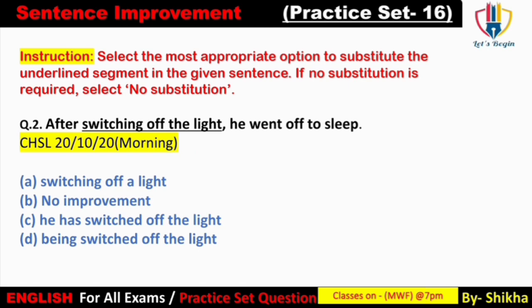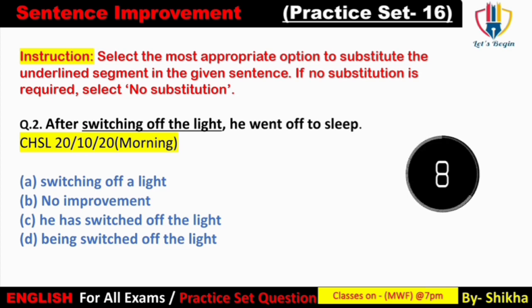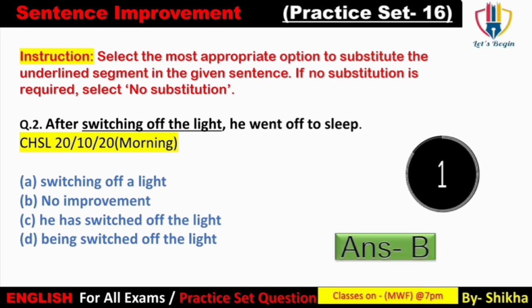Next question: 'After switching off the light, he went off to sleep.' Option A mein diya gaya hai 'switching off a light' — yahan par specified light ki baat ki gayi hai, toh 'the' hona chahiye, 'a' galat ho jayega. Option C mein 'he has switched off the light' — yeh ek alag sentence ban jayega, dono mein koi connection nahi. Option D mein 'being switched off' — 'being' ka use hota hai jab khud ke upar koi cheez apply ki jati hai, par yahan kisi ke dwara light off ki ja rahi hai. Isi liye answer hai option B — No improvement. Sentence bilkul sahih hai.